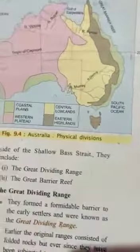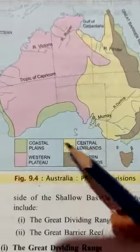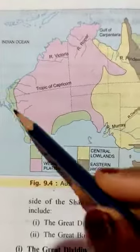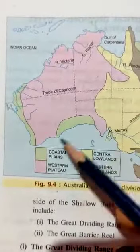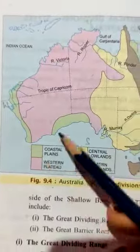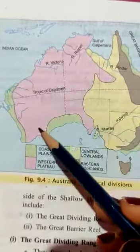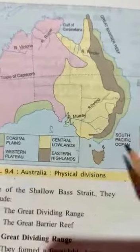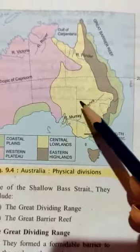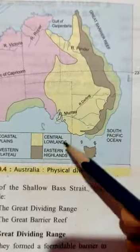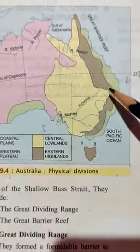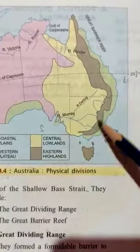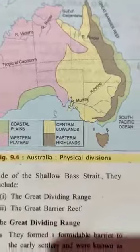In page 122 the divisions are given clearly. The green part is your Coastal Plains, the pink portion is Western Plateau, the yellow portion is Central Lowlands, and the grey portion is Eastern Highlands.